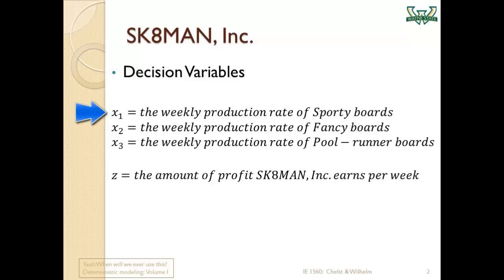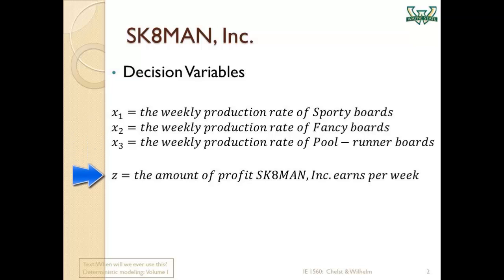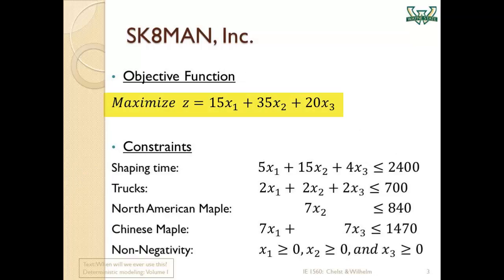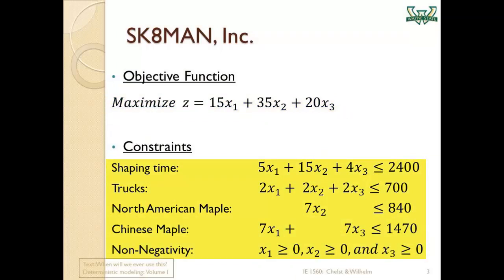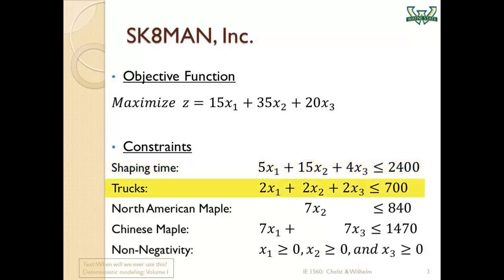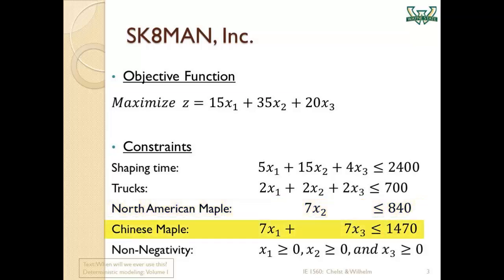The decision variables are x1, the weekly production rate of sporty boards; x2, the weekly production rate of fancy boards; x3, the weekly production rate of pool runner boards; and z is the amount of profit SCATEMAN Incorporation earns per week. The objective function is to maximize z, which is 15x1 plus 35x2 plus 20x3. We had four constraints plus the non-negativity constraints. Our constraints were shaping time, trucks, North American maple, and Chinese maple, which are: 5x1 plus 15x2 plus 4x3 ≤ 2400; 2x1 plus 2x2 plus 2x3 ≤ 700; 7x2 ≤ 840; 7x1 plus 7x3 ≤ 1470; and x1, x2, and x3 are non-negative variables.